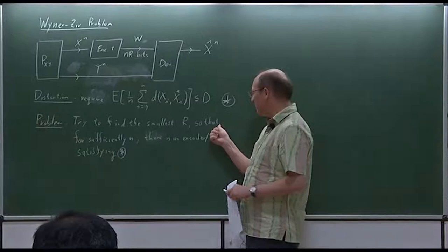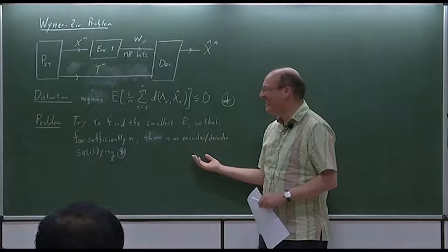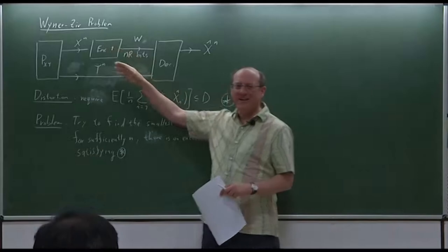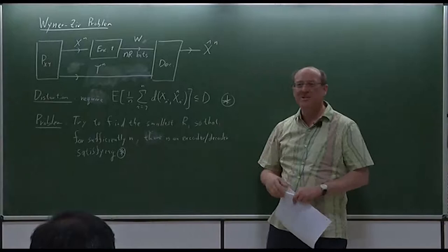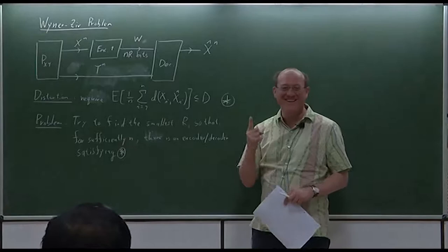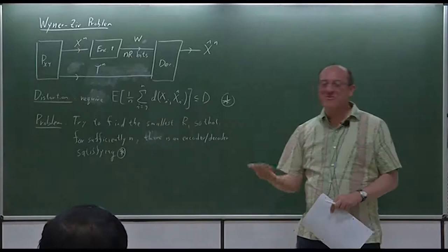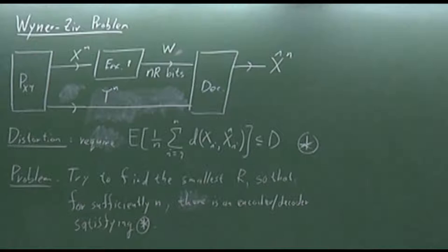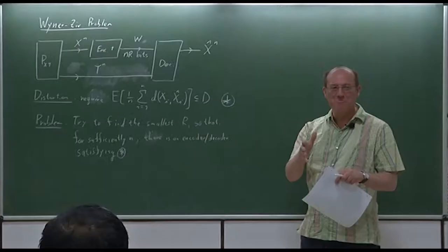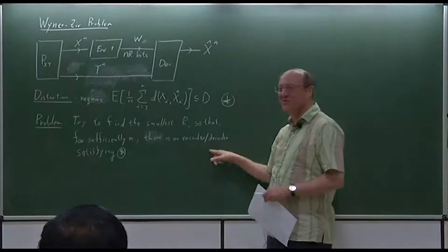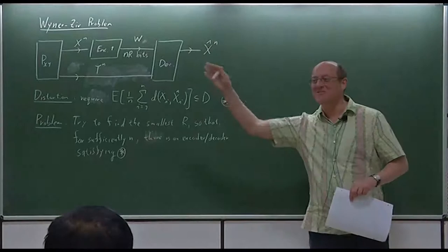Just as a quick comment: a lot of problems in network information theory are stated in terms of a sequence of (n, 2^{nR}) codes, and then people say we're looking for a sequence of codes such that something happens. But that's a very mathematical way of putting things. An engineer is happy with one encoder and one decoder. I don't care about a sequence of them — I just want one. So I like to state the problem as one and not as a sequence, because once you have a sequence, you have to worry about convergence. That language comes from the Cover-Thomas book, which introduces this. It's a very mathematical way of thinking, which is fine, but I like the engineering approach.